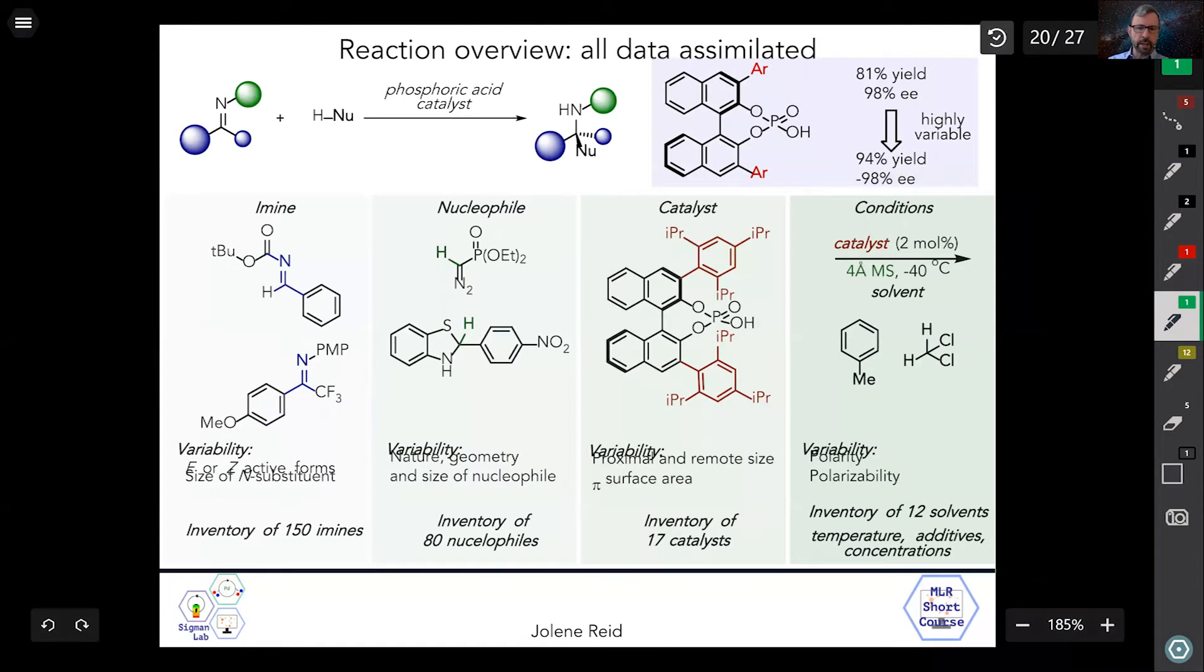So as a first step in this, what Jolene had to do is to assimilate all of the data associated with the goal of this project. Again, this is limited only to phosphoric acids, but as you can see there are more than 300 reactions that we were able to data mine. The way she data mined this was not only from the optimization studies but also from the substrate scope that was produced in many of these analyses. There are a lot of different variables here. You can look at the diversity of the imines, the nucleophiles, the catalyst was probably the least diverse, and the conditions.